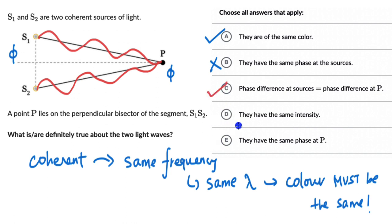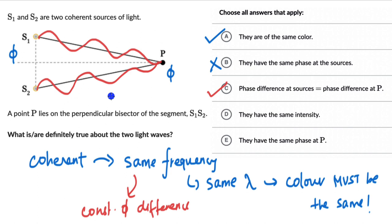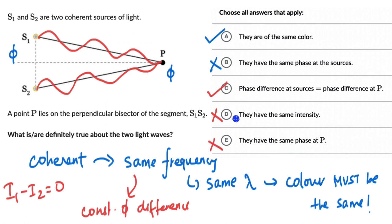Option D says they have the same intensity. For two coherent sources, they need to have the same frequency and a constant phase difference — it doesn't matter whether they have the same intensity or not. If they have different intensities, we won't get entirely dark fringes because I₁ − I₂ will never equal zero, so there will be some brightness between bright fringes. But that does not mean the two sources are not coherent — they are still coherent because an interference pattern is still produced. So option D is wrong. The last option says they have the same phase at P — this can be true in some cases but is not a necessary condition for coherence. So the right answers are A and C.